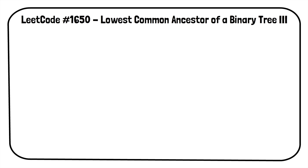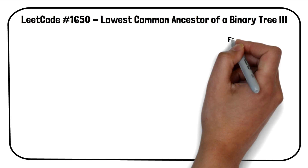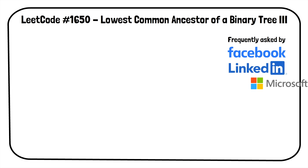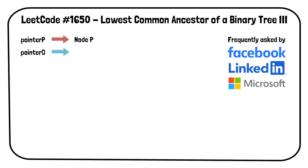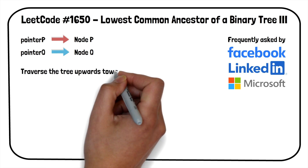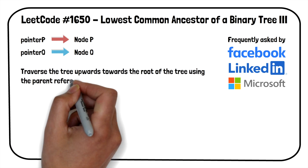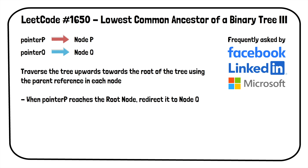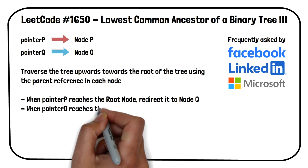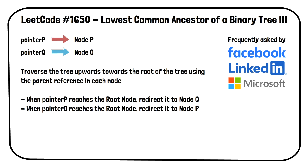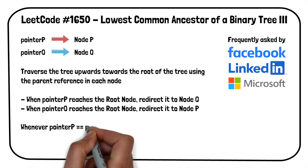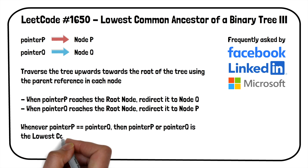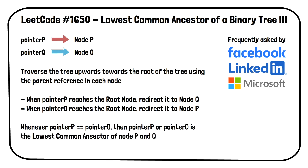Lowest common ancestor of a binary tree, part 3. This question is frequently asked by Facebook, LinkedIn, and Microsoft. In this solution, we maintain two pointers, pointer p and pointer q, initialized to node p and node q. We keep traversing the tree upwards towards the root using the parent reference in each node. When pointer p reaches the root node, we redirect it to node q, and when pointer q reaches the root node, we redirect it to node p. If at any point pointer p and pointer q point to the same node, that node is the lowest common ancestor.